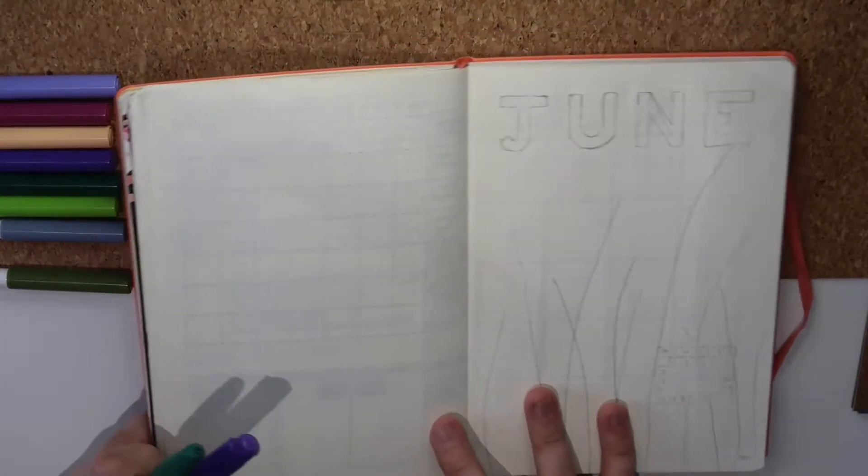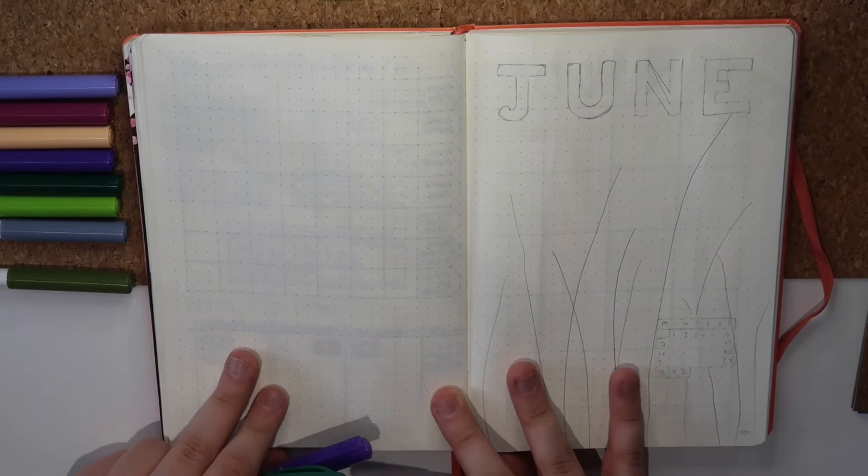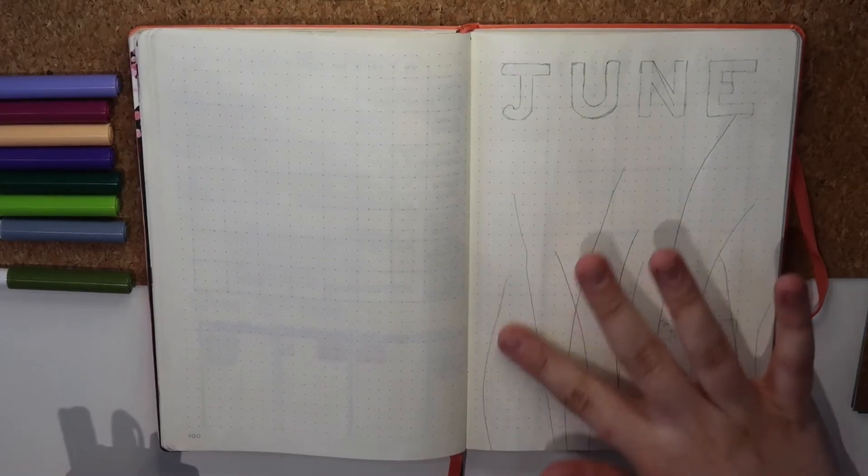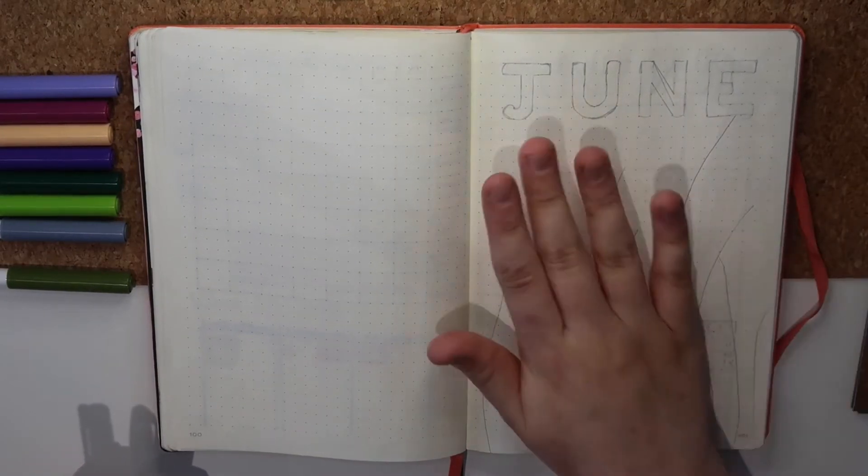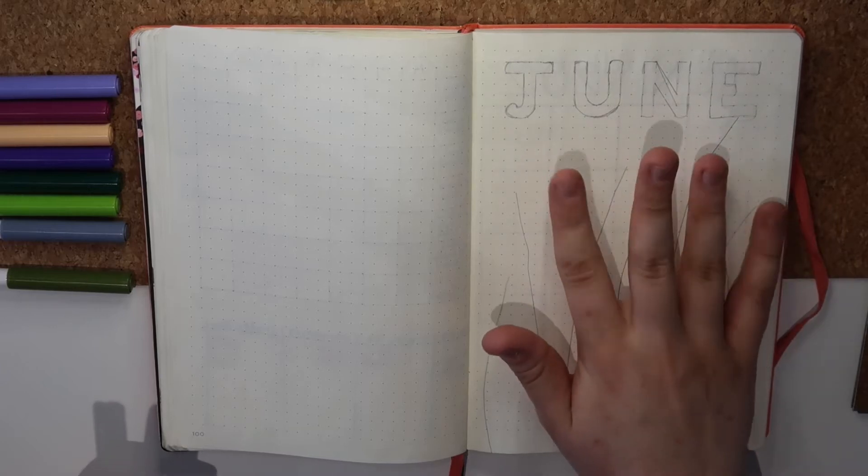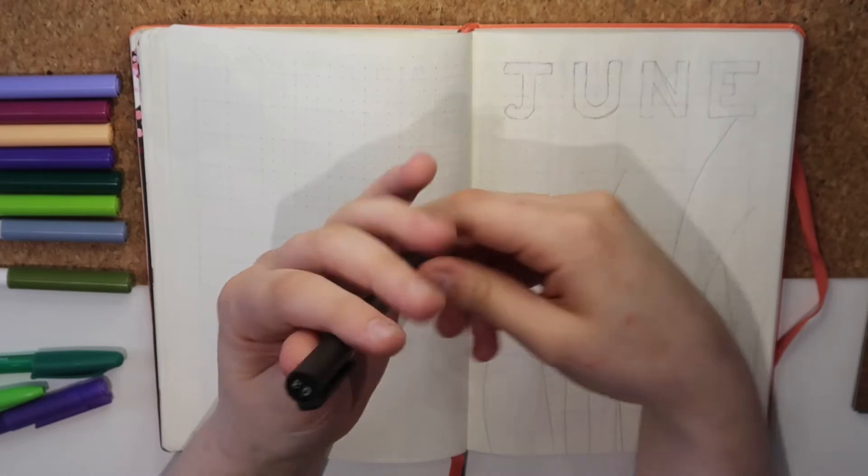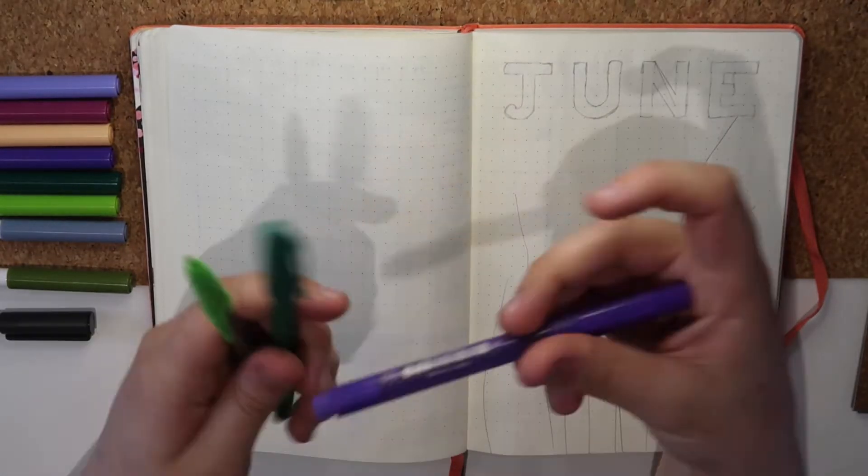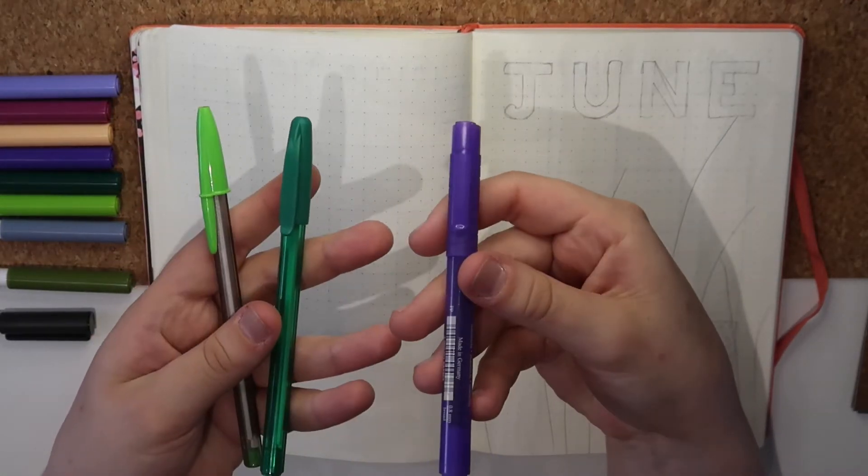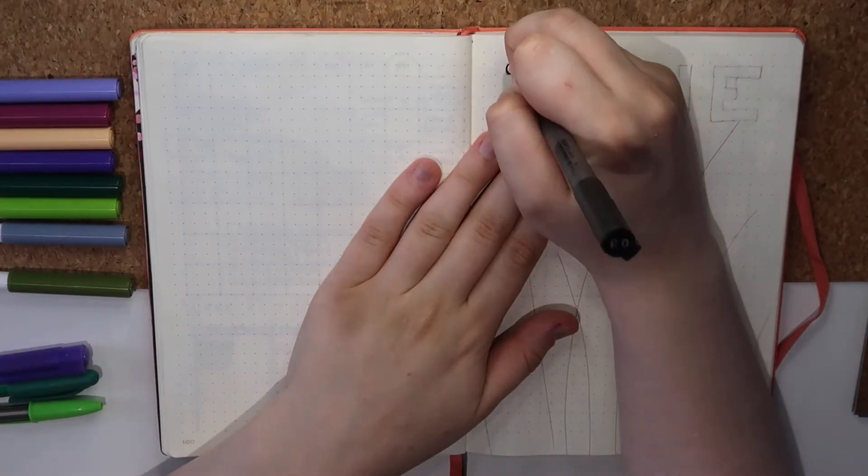As you can see, I've already penciled out the design and I've done this for all the spreads. The pen I'll be using is a black pigment liner in a 0.8 thickness. I did get some spare pens out but don't think I ended up using any of them.